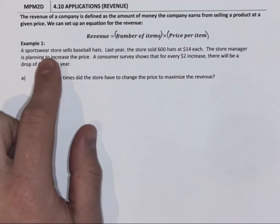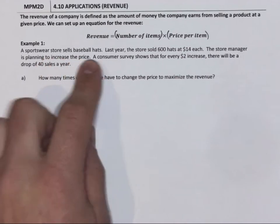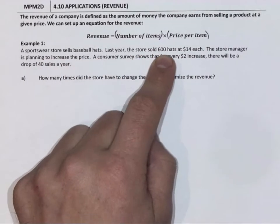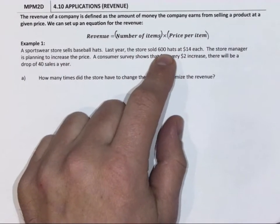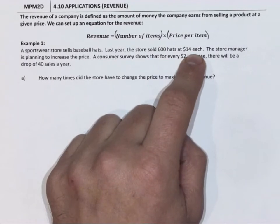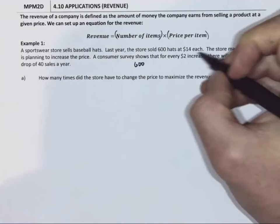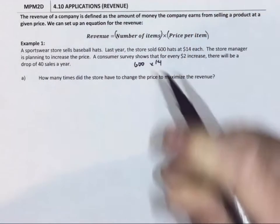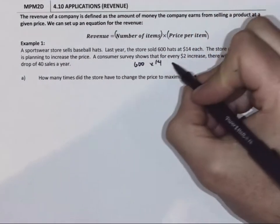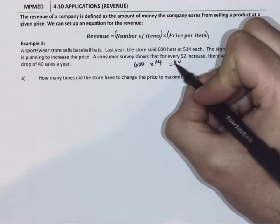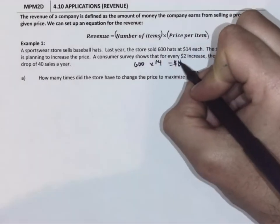A sportswear store sells baseball hats. Last year the store sold 600 hats at $14 each. So if we think about last year, 600 hats times $14 each gives us a total cash money of $8,400.